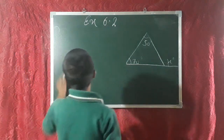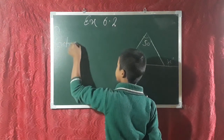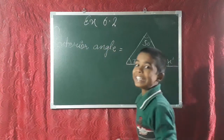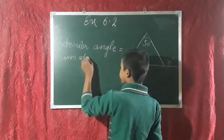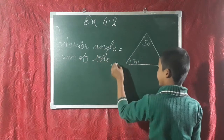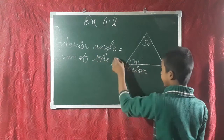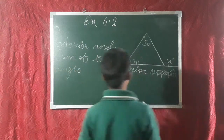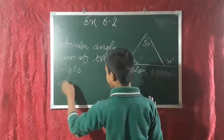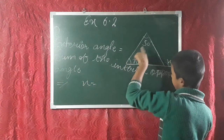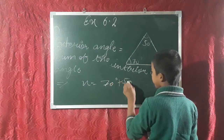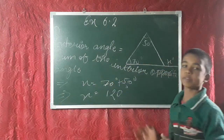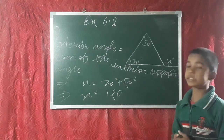We will apply one formula. The exterior angle is equal to the sum of the interior opposite angles. So x is equal to the sum of the interior opposite angles. The interior opposite angles are 70 degrees plus 50 degrees. So the value of x is 120 degrees. Hence the value of the unknown exterior angle x is 120 degrees.